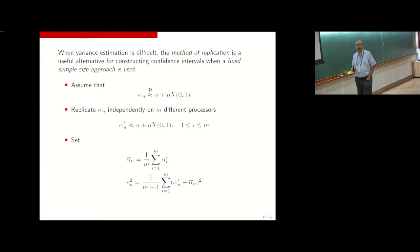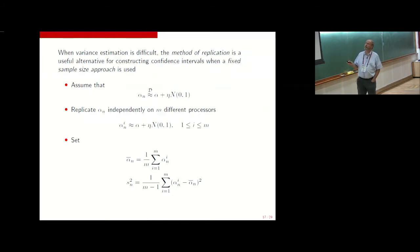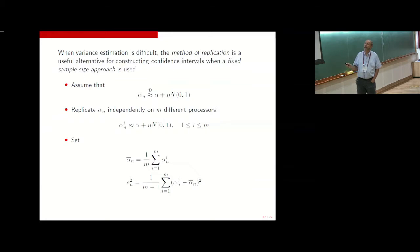So variance estimation is unpleasant. The standard method used in the non-sequential setting to avoid it is the method of replication. We'll run the algorithm on M independent processes using different random number streams. When we run on M different processes, we get M different results and can compute a grand average across the M processes, along with a sample mean and sample variance computed across M rather than across n.